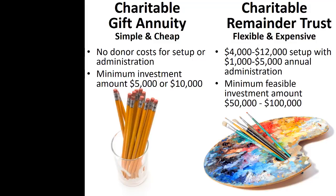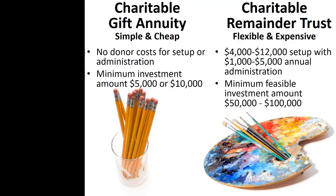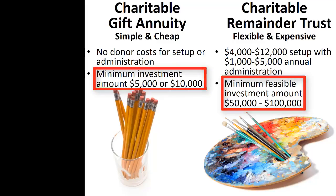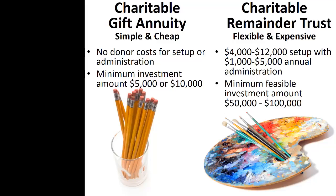In contrast, charitable remainder trusts are usually handcrafted documents specifically designed for the individual donor and his or her particular desires. This enormous flexibility comes at a cost, both for the initial creation of the charitable remainder trust and for annual administration. Because of these costs, the minimum feasible amount for a charitable remainder trust is normally 10 times that of a charitable gift annuity. Of course, there are significant potential advantages to using a charitable remainder trust that are not available with charitable gift annuities that can, in many cases, warrant the added expense for the donor.